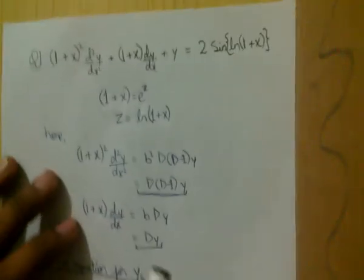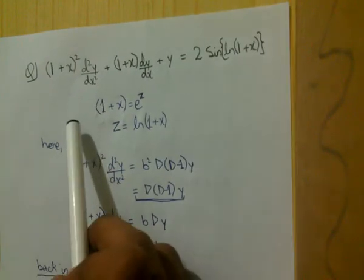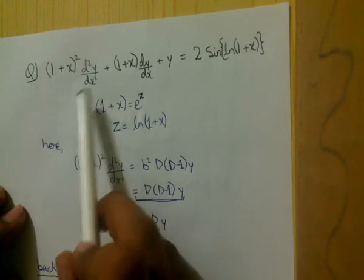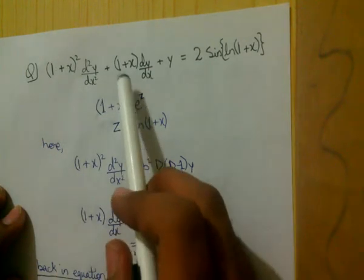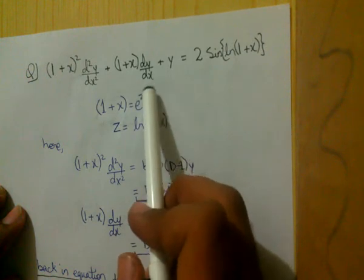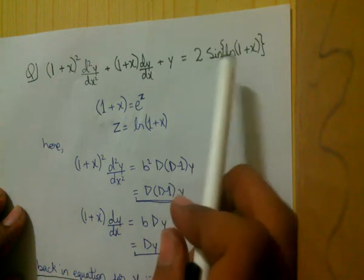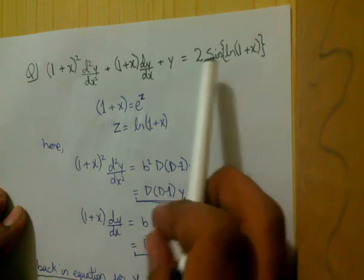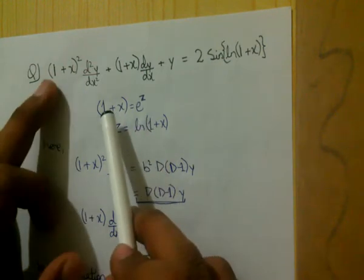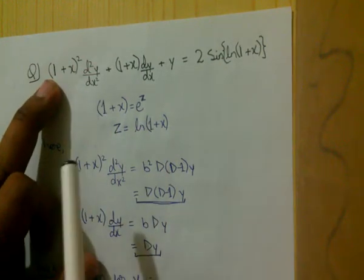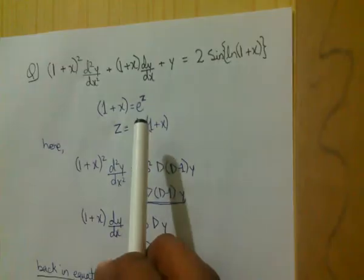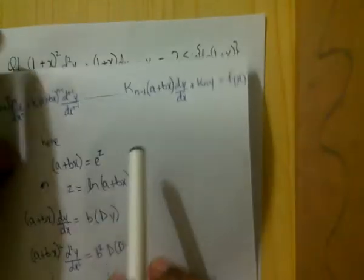Now let us look at a question. The equation is: (1 + x)²(d²y/dx²) + (1 + x)(dy/dx) + y = 2·sin(ln(1 + x)). First of all, we recall the assumption that (a + bx) = eᶻ, which leads to D(D−1)y.